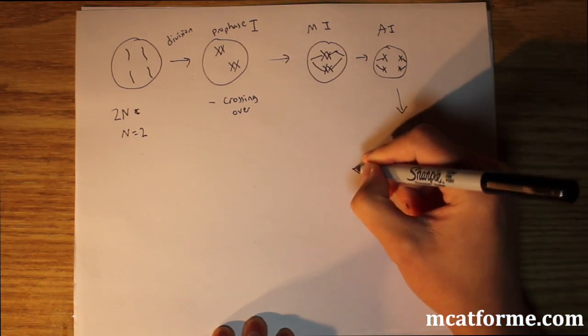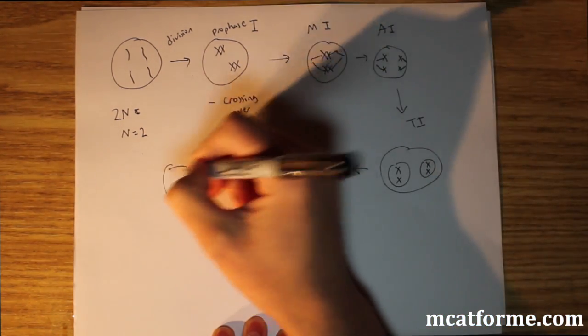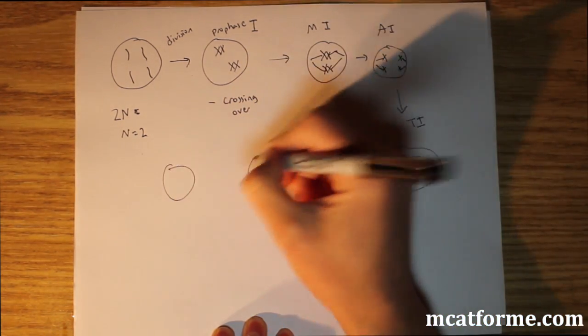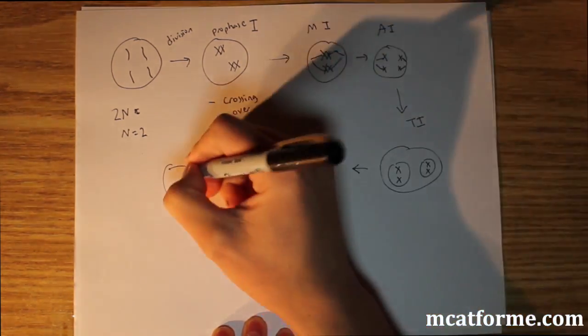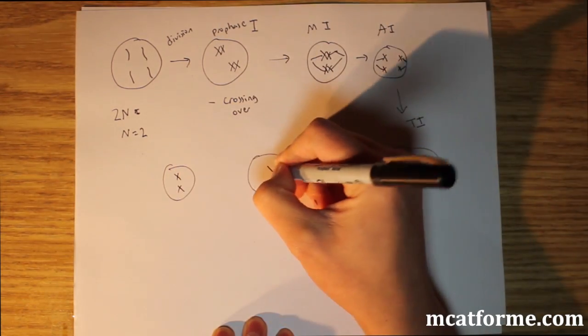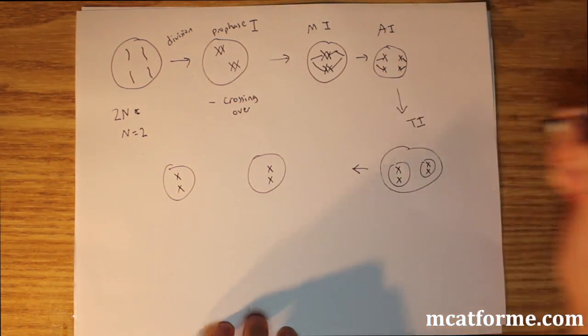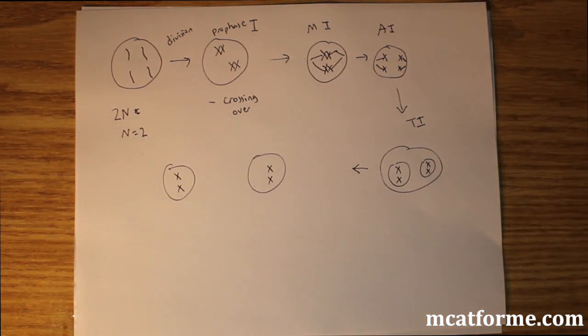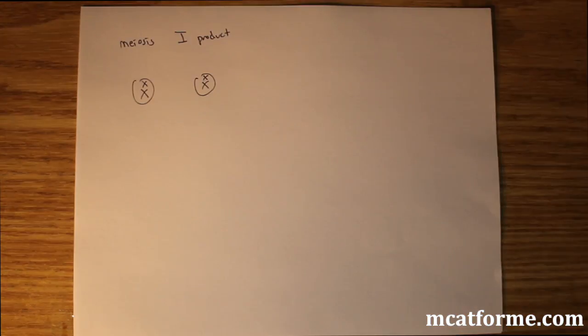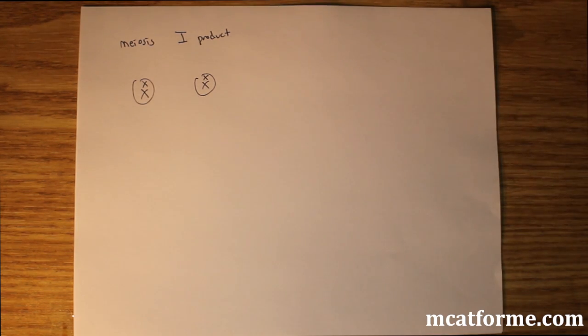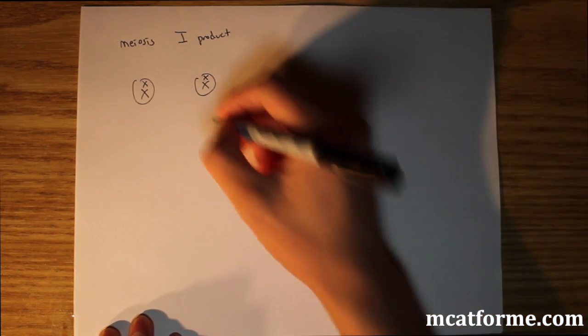Then cytokinesis occurs. At the end of meiosis 1, we have two different cells. Meiosis 1 produced these two cells, each with two chromosomes within them. After meiosis 1, the cells will undergo meiosis 2.